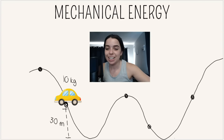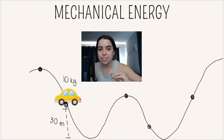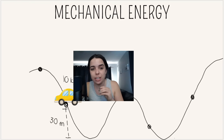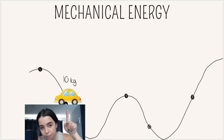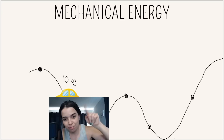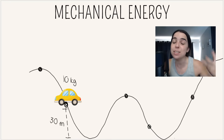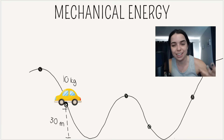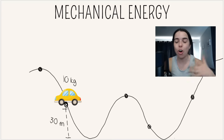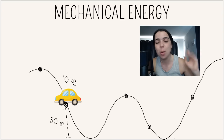An interesting property of mechanical energy is that in an isolated system — which is what we deal with in grade 10, 11, and 12 physics — the mechanical energy calculated at one position will be the same at every other position. This leads us to the principle of conservation of mechanical energy, which will be covered in another video. Check out the playlist for more videos.